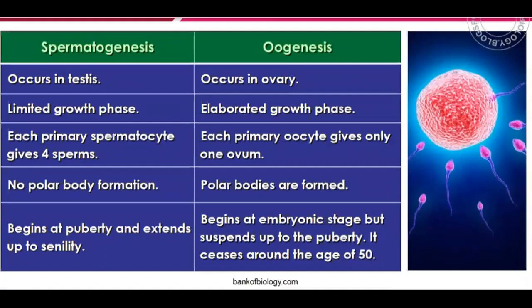Now let's study the differences between spermatogenesis and oogenesis. Spermatogenesis occurs in the testes; oogenesis occurs in the ovary. The growth phase in oogenesis is much more elaborated. Each primary oocyte gives rise to only one ovum, because the rest become polar bodies, which degenerate and do not participate in reproduction.